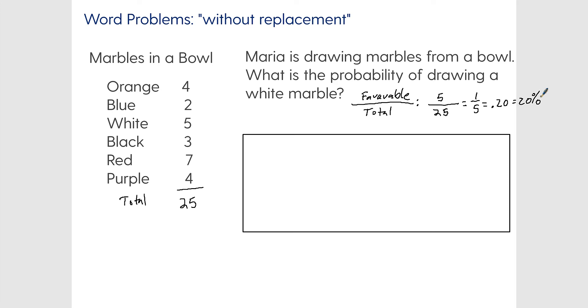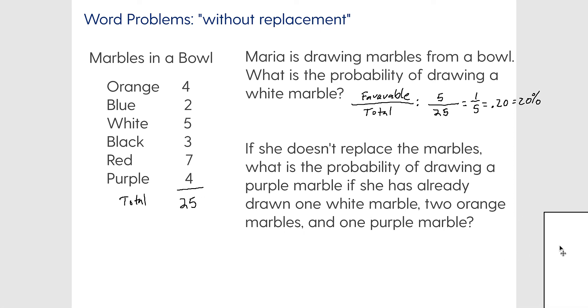Let's see this reply without replacement situation. If she doesn't replace the marbles, what is the probability of drawing a purple marble if she's already drawn one white marble, two orange marbles, and one purple marble? If you get a problem like this, you need to be able to either on your own sheet of paper create sort of a tally of what's happened. What is the probability of drawing a purple marble? That's what we want. But she's already drawn one white marble, so now we're down to four over here.